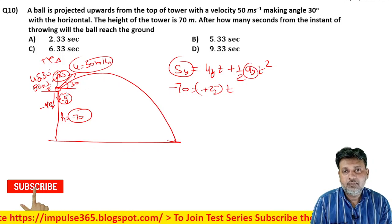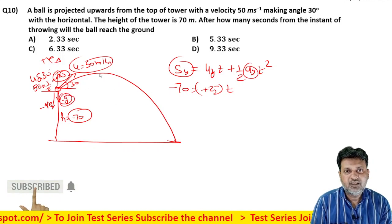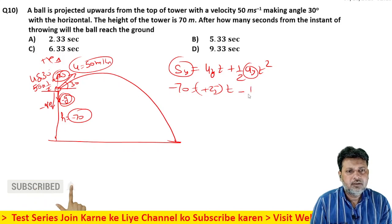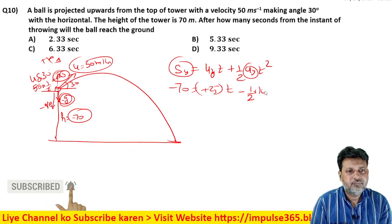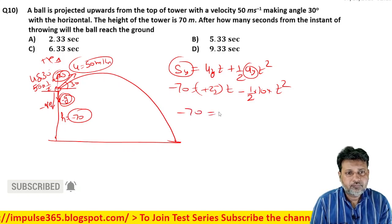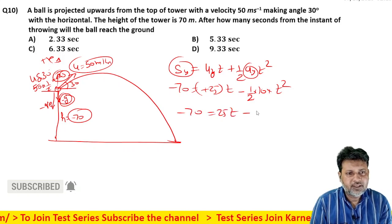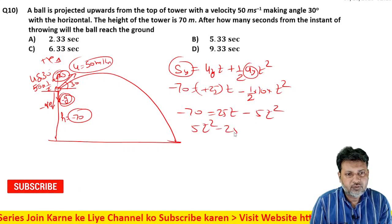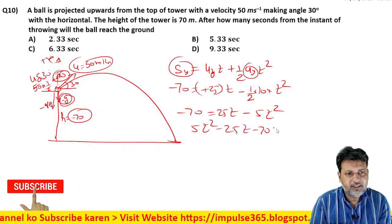Aur ay - acceleration toh gravitational niche ka taraf hai, minus g. g ki value toh 10 kar dete hain into t square. Ye isko solve karte hain - 25t minus 5t square, ya 5t square minus 25t minus 70 equal to zero.